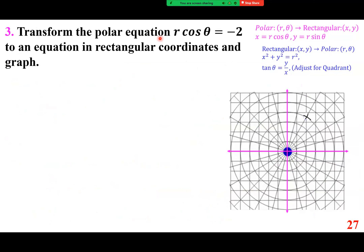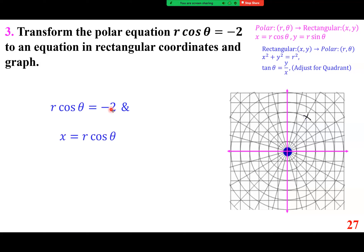Transform the polar equation r cosine theta equals negative 2 to rectangular coordinates. Since r cosine theta equals negative 2 and we know x equals r cosine theta, therefore x equals negative 2, which is a vertical line.